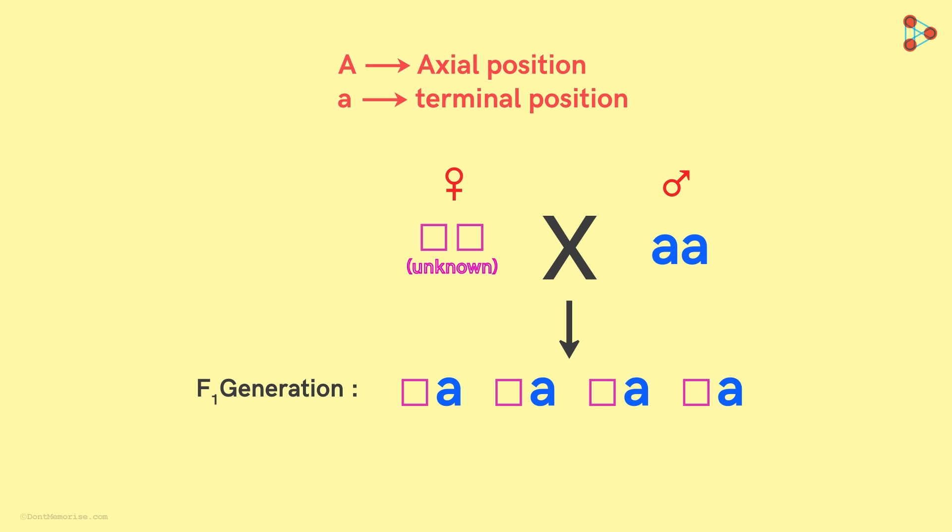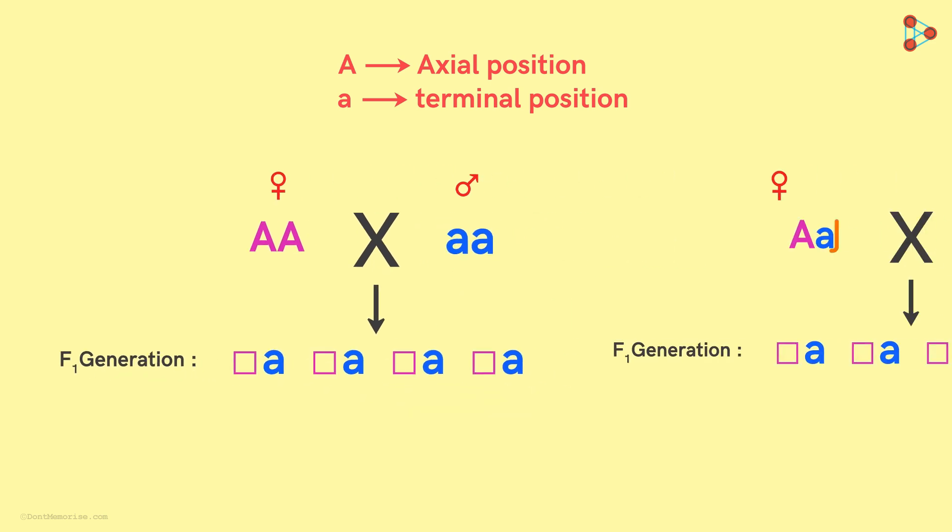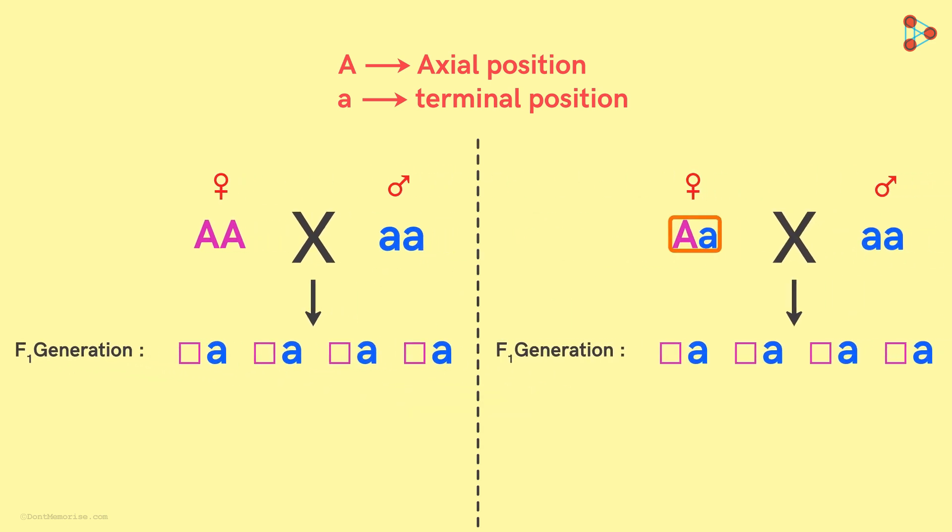Talking about the genotype of our plant, there could be two possibilities! One, it could be AA both capital, or it could be Aa one in capital and the other in lower case! These are the two possibilities or cases!